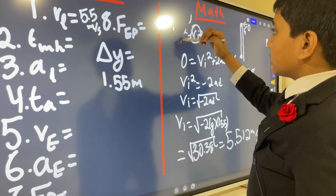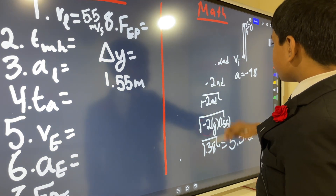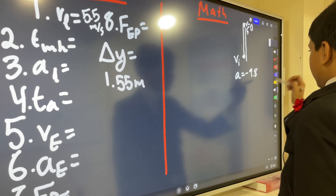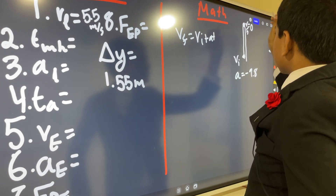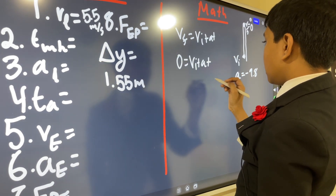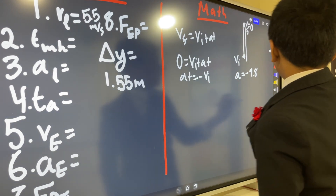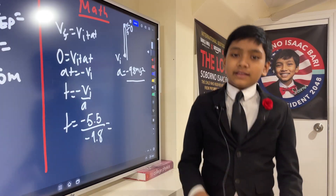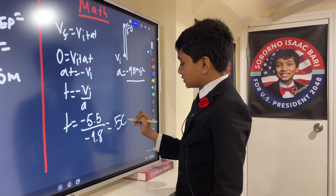Next, we're going to find the time it takes to reach max height. That one is a little more simple. We use VF = VI + AT. Assigning VF = 0: 0 = VI + AT, so AT = −VI, and T = −VI / A. The result is 0.562 seconds.